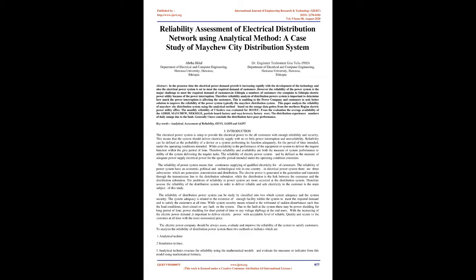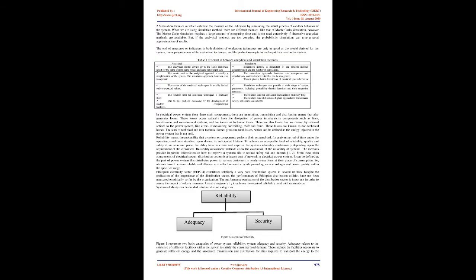Reliability can be defined as the probability of a device or a system performing its function adequately, for the period of time intended, under the operating conditions intended. While availability is the performance of the equipment or system to deliver the required function within the given period of time. Therefore, reliability and availability are both measures of system performance — the ability of the system to deliver the required tasks. The reliability of an electric power system can be defined as the measure of adequate power supply for a specific period under operating condition constraints. The reliability of a power system means continuous supplying of qualified electricity for all customers. The reliability of the power system has an economic, political, and technological role in a country.